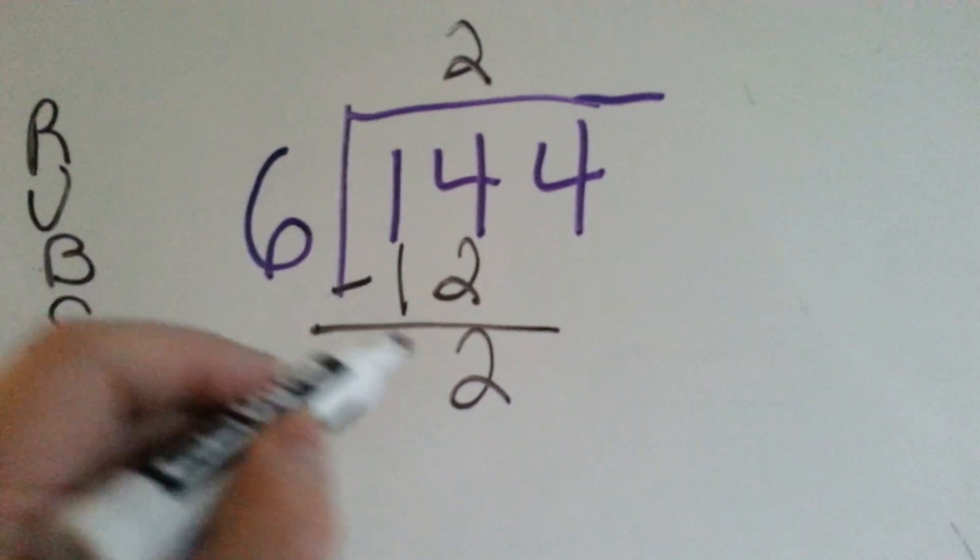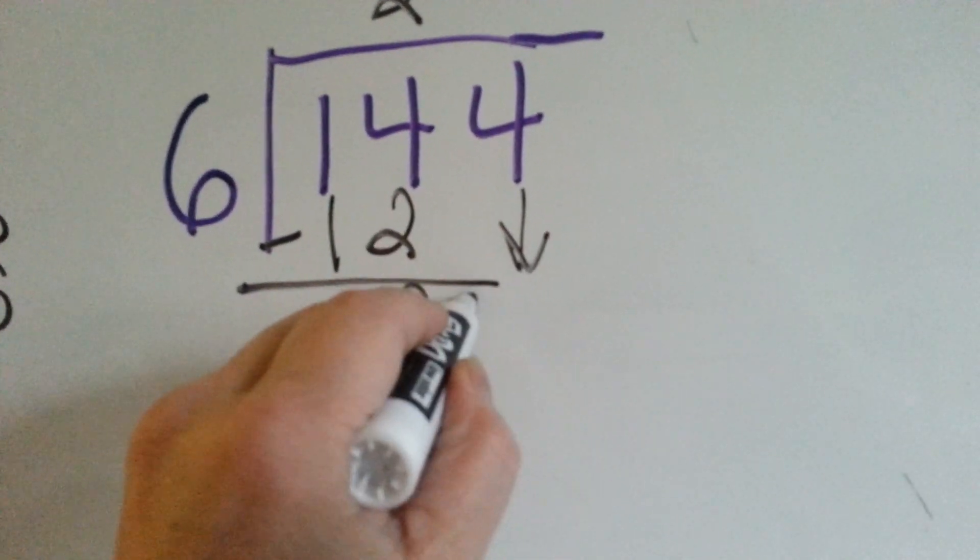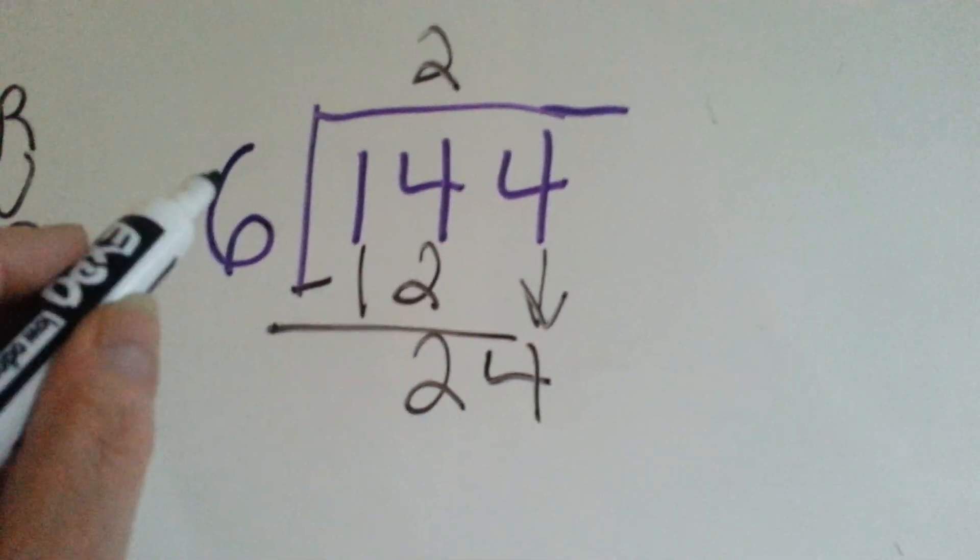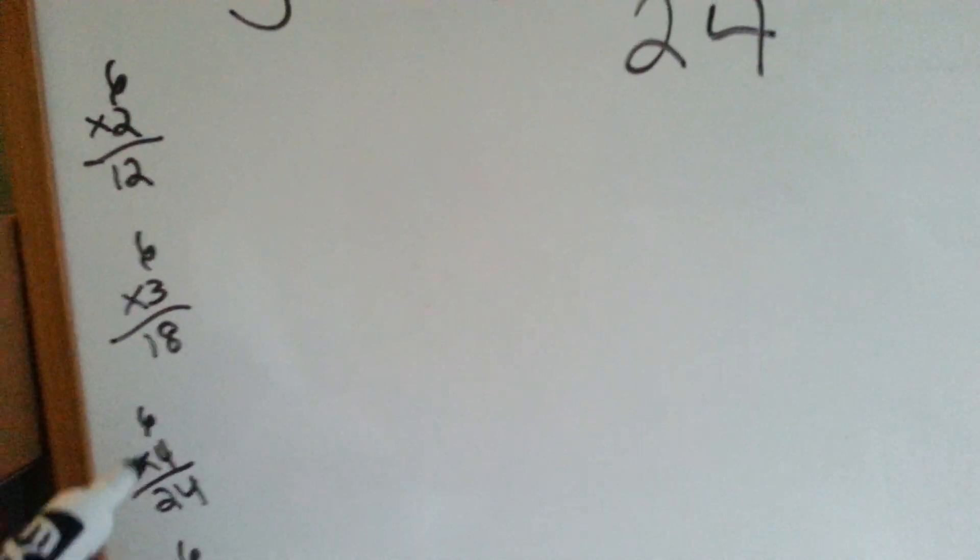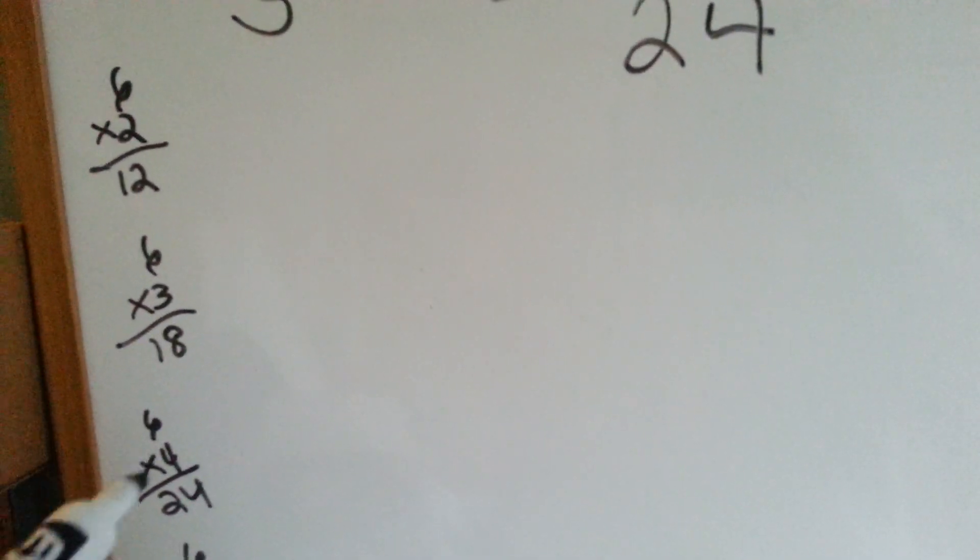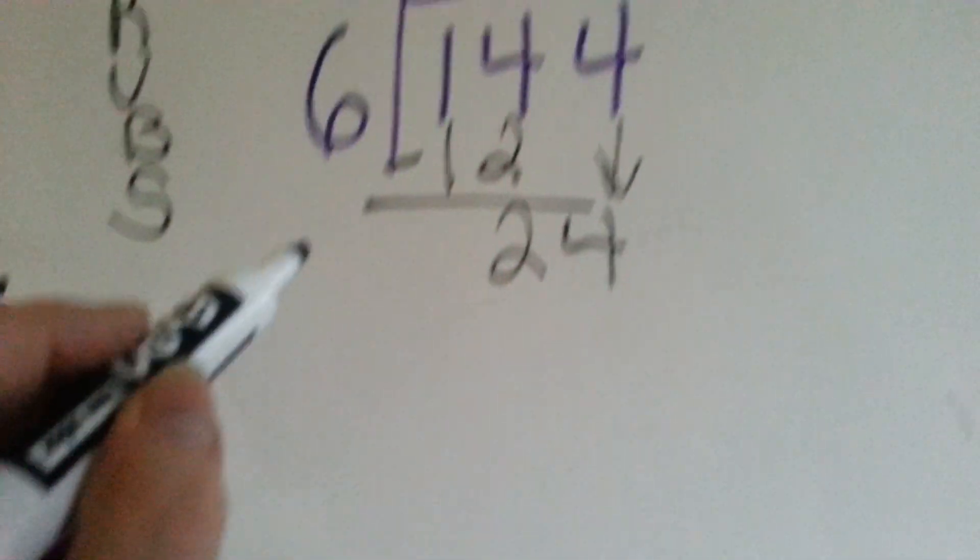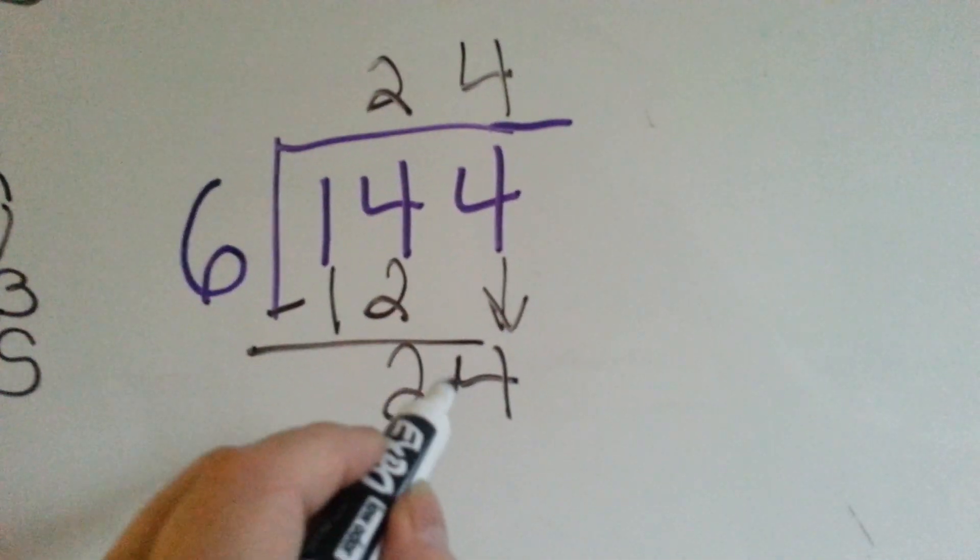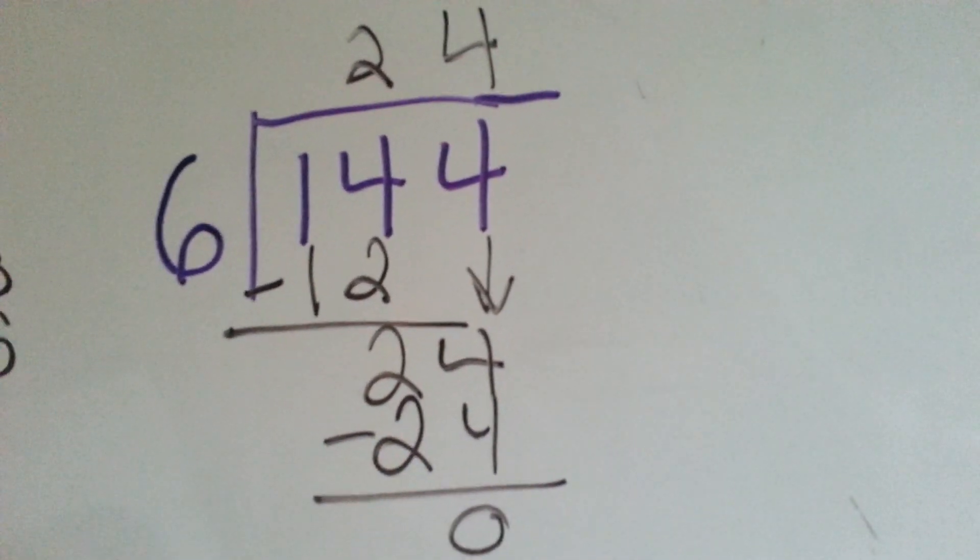And now we say, can 6 fit into 2? No, of course not. So it's the 4's turn to come down. It comes down next to the 2. 6 goes into 24 how many times? Well, our 6 times table tells us that 6 times 4 is 24. So we're going to put a 4 above here. 6 times 4 is 24. We're going to write our 24 down here, do our subtraction, and get 0.